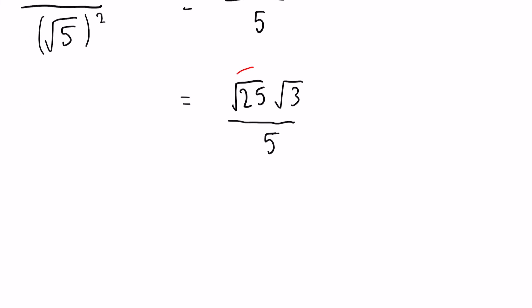Now we know the square root of 25 is 5. So we have 5 root 3 divided by 5. Now just like with any fraction, when we have a multiple on the top and bottom, we can just cancel them out. So we can cancel the 5s here, leaving us with our final answer of the square root of 3.